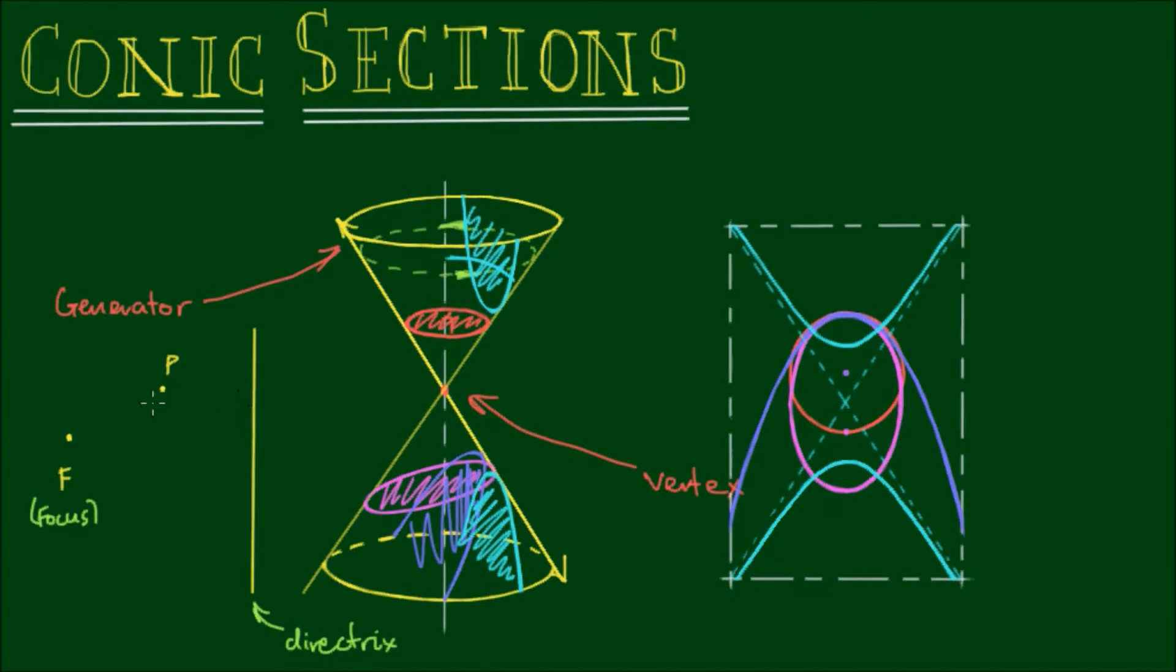Now a conic section will be formed when the distance from point P to point F—so this distance—and the distance from point P to the directrix—and I should say it's a perpendicular distance to the directrix—so a conic section will be formed when the distance PF over the distance PD is a constant called E, and it's E for eccentricity.